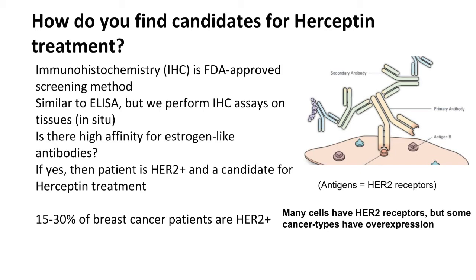In patients who have a high enough concentration of HER2 receptors in their tumor, they are considered a good candidate for Herceptin. Herceptin is able to treat approximately 15 to 30 percent of breast cancer patients. In a generic IHC example, we can consider the antigens to be HER2 receptors.